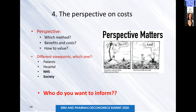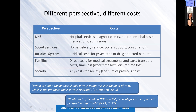The next thing to consider is the perspective on costs. Perspective is essential in pharmacoeconomics because it determines which costs to include. There are different points of view depending on who you want to inform — whether it is the NHS, a hospital, or society. Depending on the perspective, we include different costs. From a broader societal perspective, we should also include costs for families, caregivers, and productivity losses.